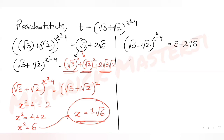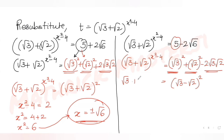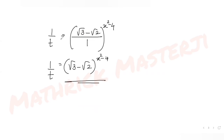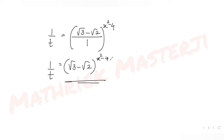For the second equation: (√3 + √2)^(x²−4) = 5 − 2√6. The right-hand side is (√3)² − 2·√3·√2 + (√2)² = (√3 − √2)². However, the bases on both sides are different — left is (√3 + √2), right is (√3 − √2) — so we cannot directly equate powers. We use the reciprocal relationship: 1/t = (√3 − √2)^(x²−4).